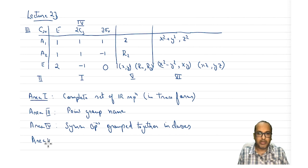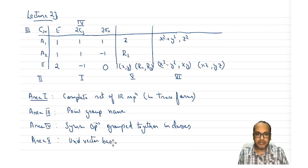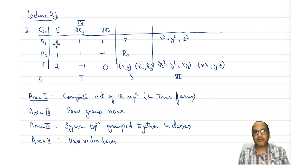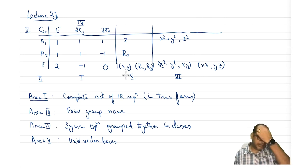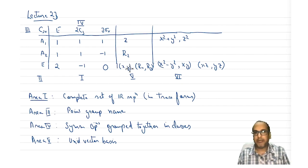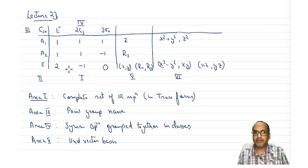Area 5 we also know, because we have done unit vector transformation — these are unit vector basis sets. For example, if Z is written here, that means unit vector Z will be transformed as that particular representation. If RZ is written here, that means RZ transforms as that particular IR representation. When X, Y are written within braces, it means X and Y are not separable and together form a degenerate representation.